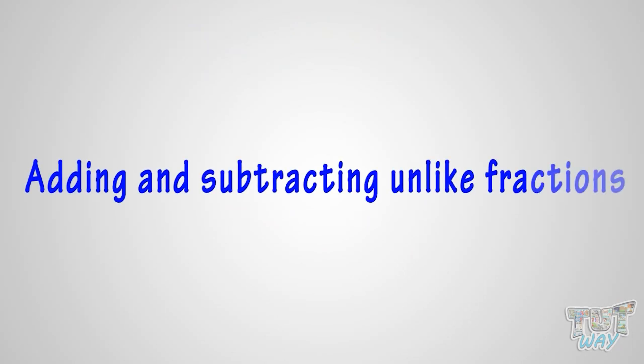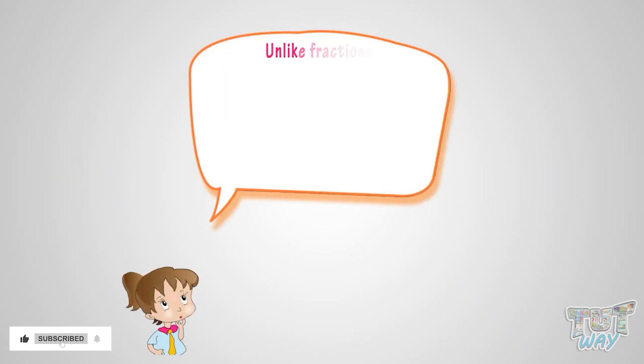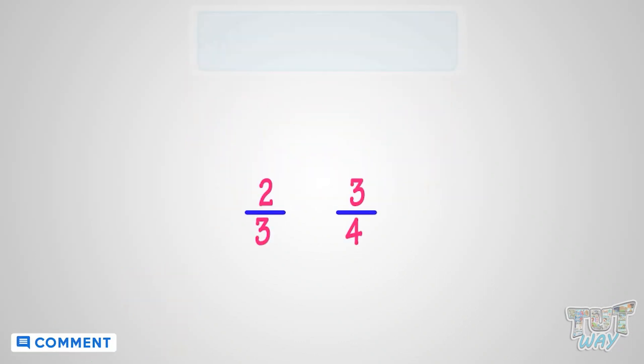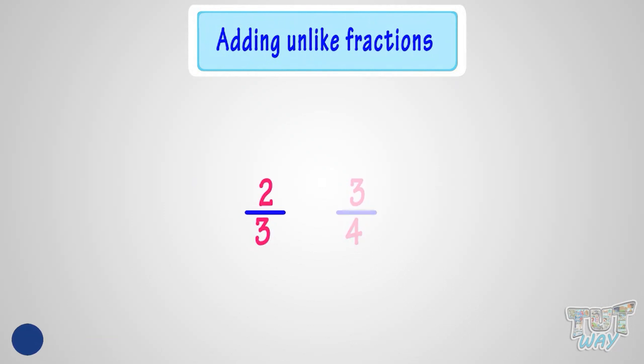How we do addition and subtraction on unlike fractions. Let's first learn what are unlike fractions. Fractions with different denominators are called unlike fractions. Here we have two unlike fractions, 2 by 3 and 3 by 4.